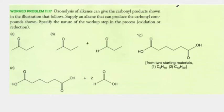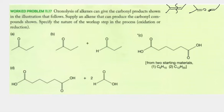Just a brief reminder: when we have ozonolysis and we have a double bond, we basically break in the middle and we add two oxygens to either side — those are our products. Now if we're given the product, how do we go back?